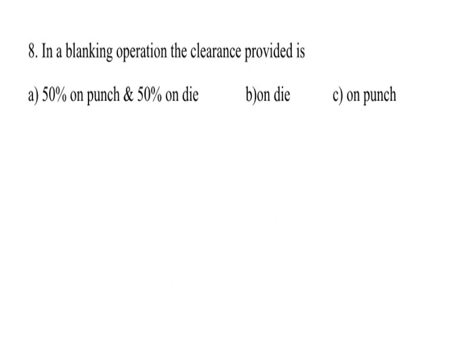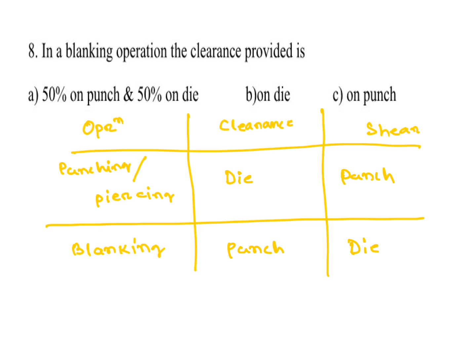In a blanking operation, the clearance is provided on the punch. For punching and piercing, clearance is given to the die and shear is given to the punch. For blanking operation, clearance is given to the punch and shear is on the die. So for blanking, clearance is given to the punch — C is the answer.